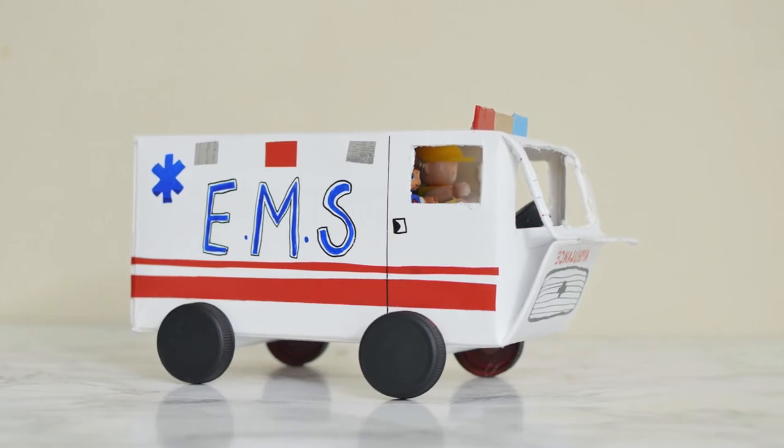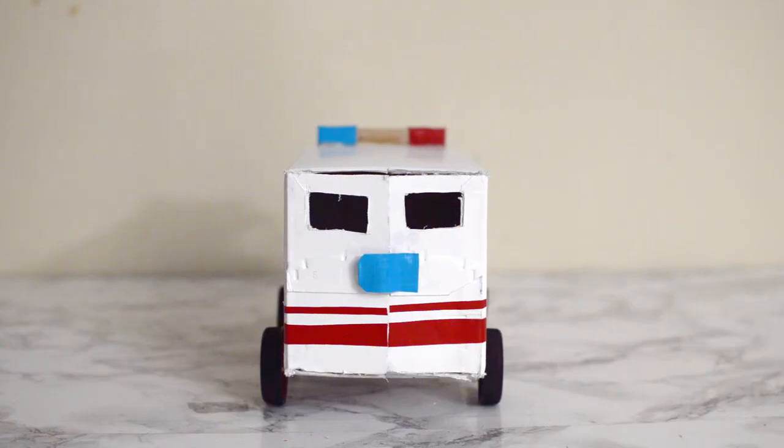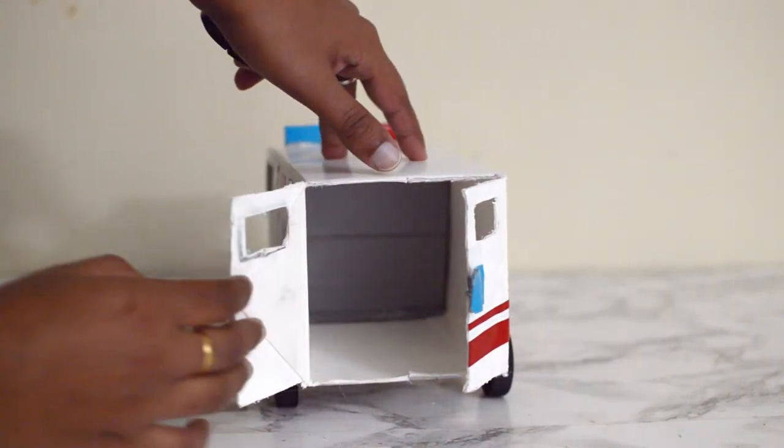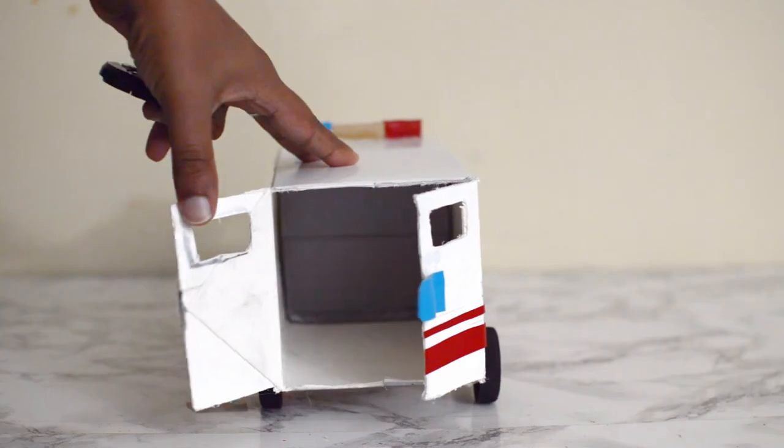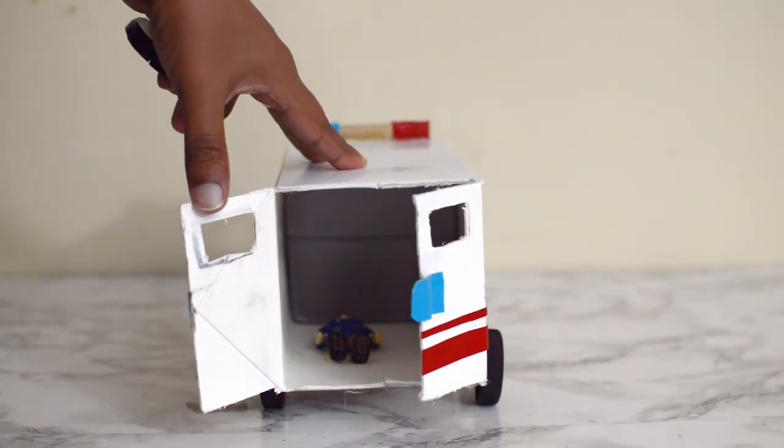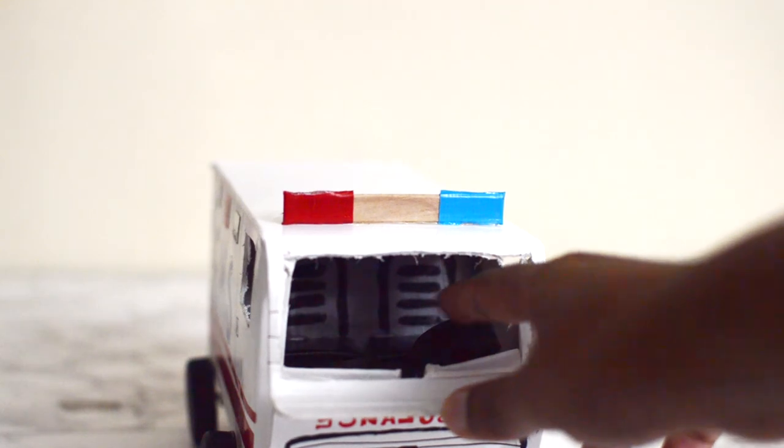Add the details like stripes, wordings using tape or paint markers. To keep the back doors closed I used velcro dots. Attach one part of the velcro to a piece of tape and glue the tape to one of the doors. Stick the other part on the other side of the door. Then insert the separation part into the milk carton and now the ambulance is ready for rescue.